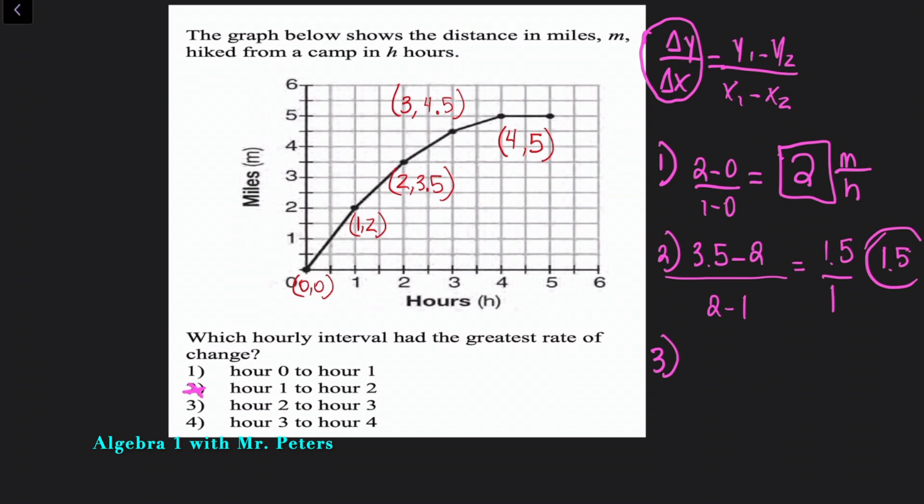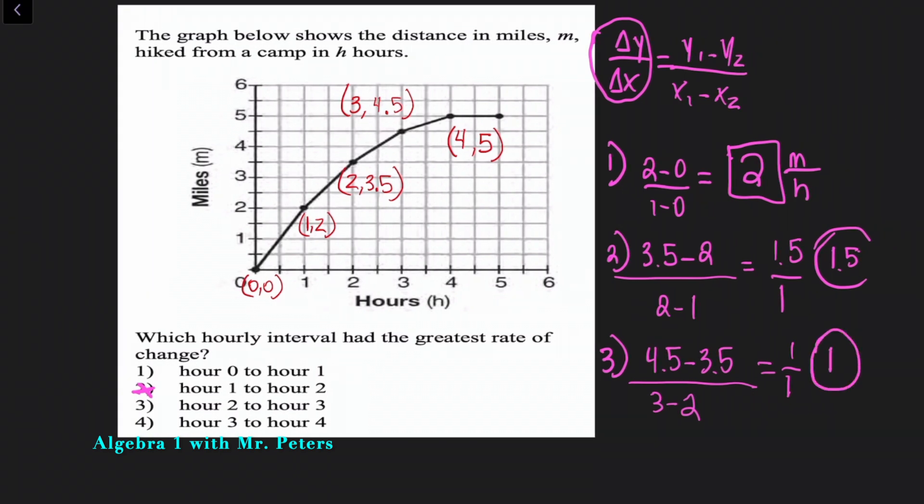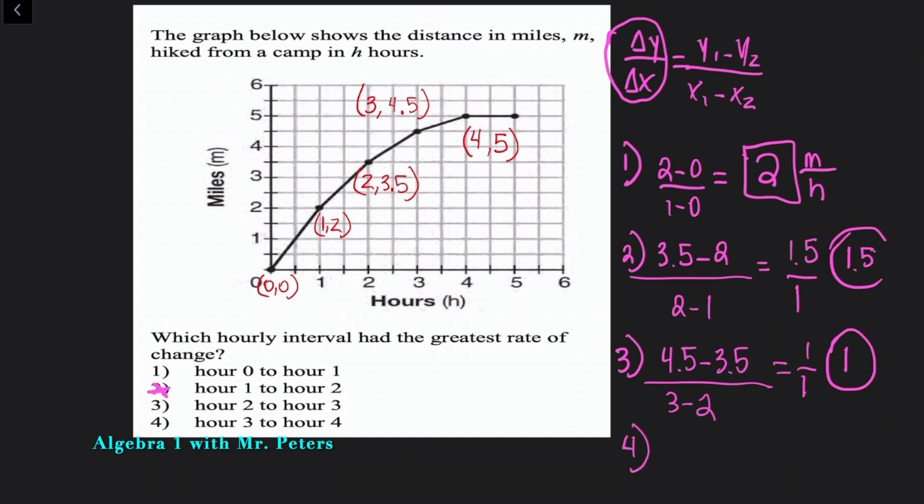So we know answer choice two isn't correct. So we go to hour two to three. So now we're looking at the coordinates three and four point five and two and three point five. So when I set this up, four point five minus three point five all over three minus two. So this is just giving me one to one. So we know the average rate of change is just one mile per hour. And then when we go to the last part, we're talking about hour three to four. We have five minus four point five all over four minus three. This is just basically going to give us zero point five over one, which is just the same thing as half.